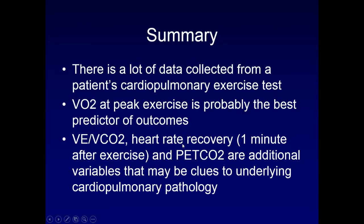In summary, there is a lot of data we collect from a cardiopulmonary exercise test. VO2 at peak exercise is probably the best predictor of outcomes, but VE/VCO2, heart rate recovery at one minute, and end-tidal CO2 are additional variables that may be clues to underlying cardiopulmonary pathology or its severity.